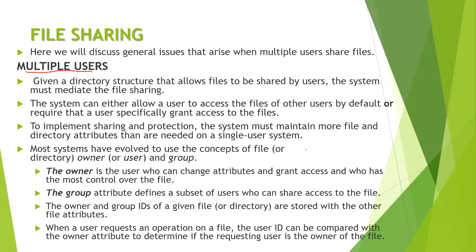Modern systems classify files on two different bases: one is user basis, meaning owner basis, and the other is group. The owner is the user who can change attributes and set file permissions — controlling how others can be granted access. Different file names, types, and locations are governed by the owner, and group members access the file based on the privileges given by the owner.